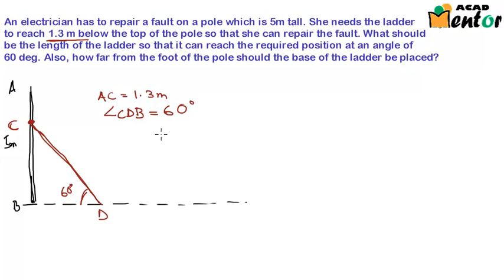Angle CDB is 60 degrees. Can we find out the length of BC? The length of BC would be AB minus AC. This is nothing but 5 meters minus 1.3 meters. So BC is 3.7 meters. So we know this height is 3.7 meters. We have to find out the length of the ladder and the distance between points B and D. So we have to find out this distance as well. So I will just write it down to find CD and BD.